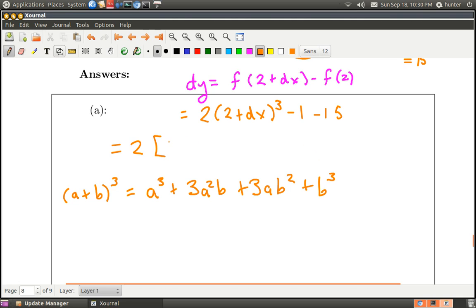And so that gives me 2 cubed is 8, plus 3 times 2 squared is 12, and now I've got a little dx, and I've got 3 times 2 is 6, and now b is squared, so I've got a little dx squared here, and this is giving me a dx cubed here on the end. And you can see that this last little tail part just amounts to minus 16.